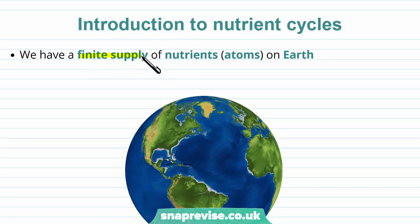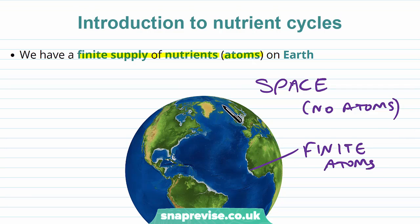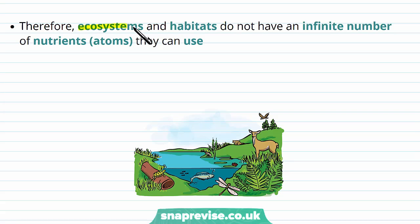On planet Earth we have a finite supply of nutrients, and those nutrients are made of atoms, so there are a finite supply of atoms on our planet. Outside of the planet is just space, where there are no atoms. This means there is only a certain number of atoms in the entire planet and it won't be changing. Therefore the ecosystems and habitats do not have an infinite number of nutrients or atoms that they can use. If they were infinite, the ecosystem would just keep growing and growing to a massive size because there's no need for limitations.